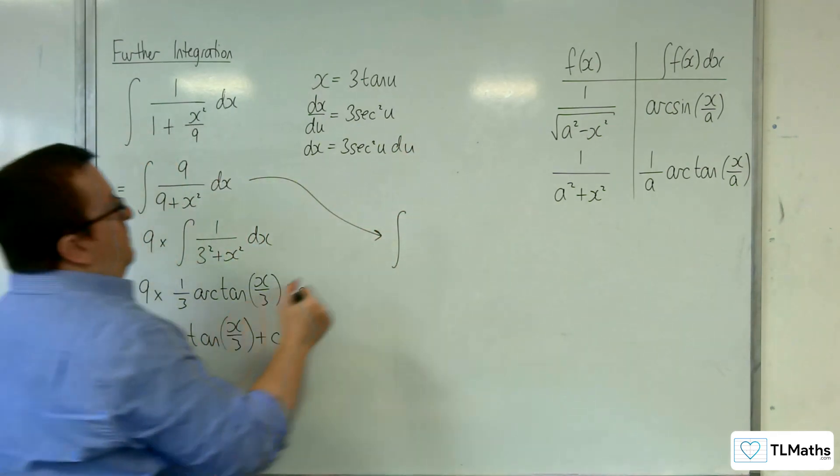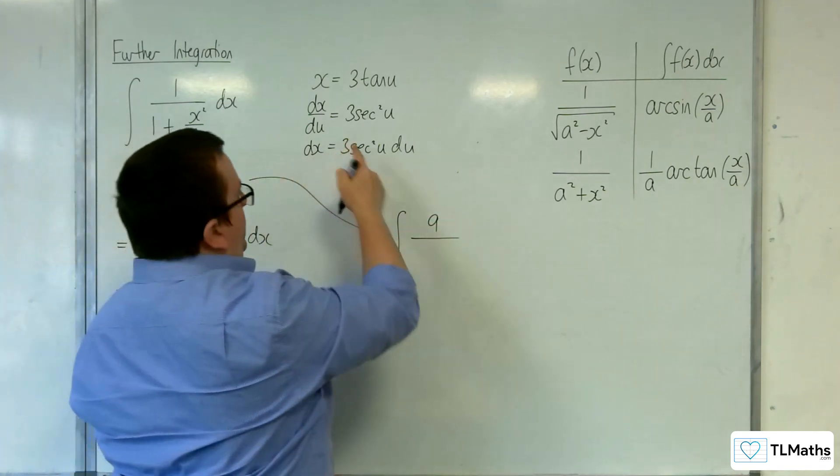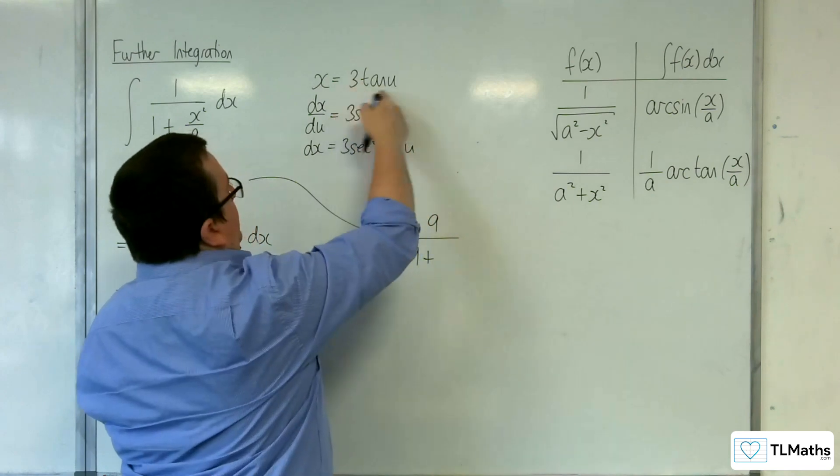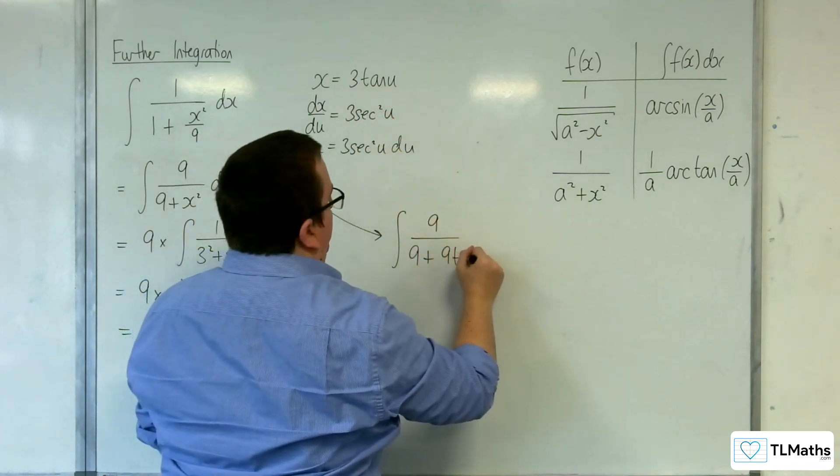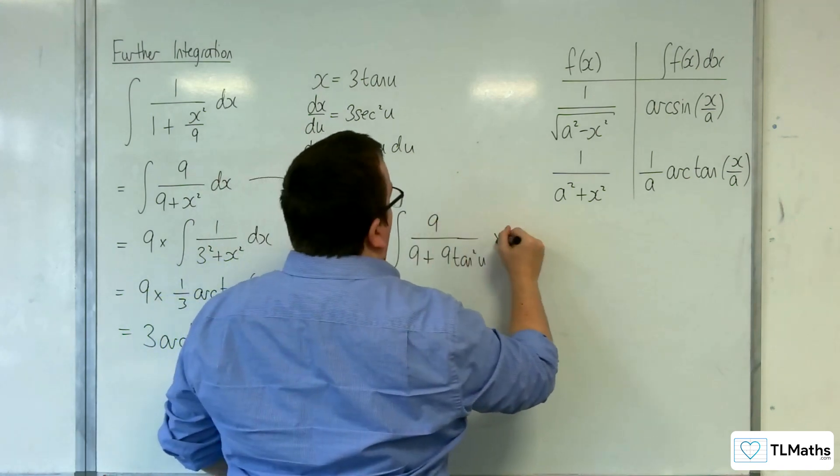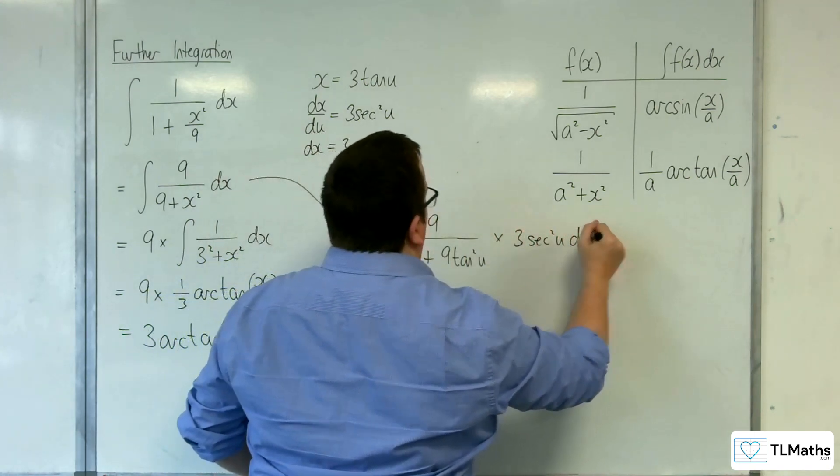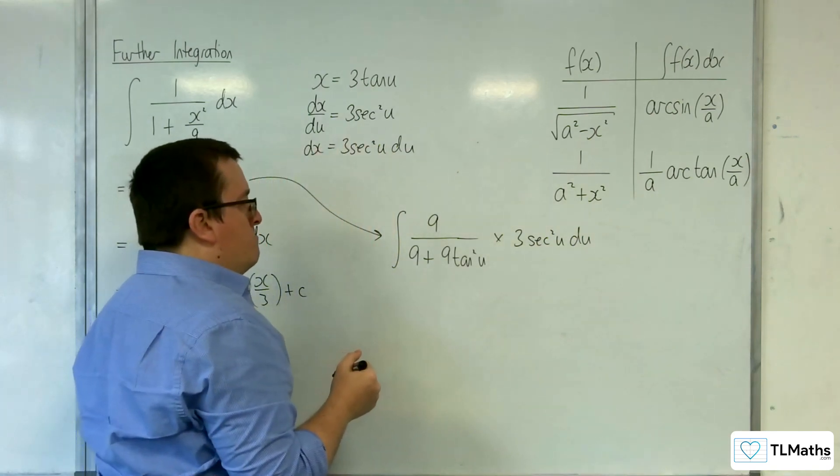We'd have the integral of 9 in the numerator. We've got 9 plus this squared, so 9 tan squared u, times 3 sec squared u du.